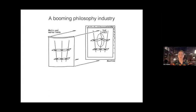For example, in our first model of general relativity, the galaxy in the middle passed through a point.